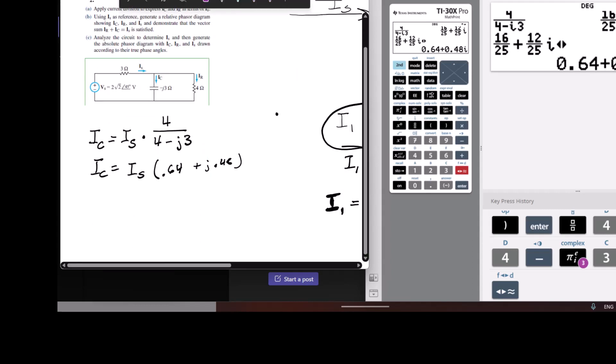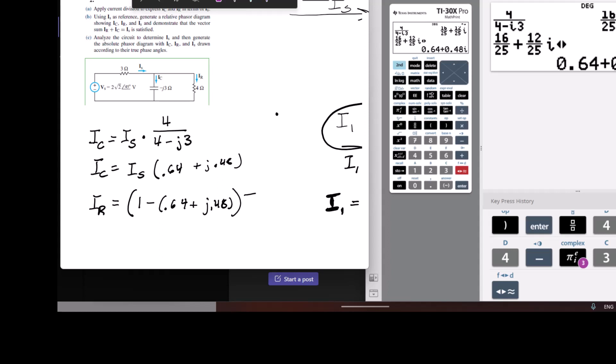So I get 0.64 plus j0.48. And then IR will equal 1 minus (0.64 plus j0.48) times IS.